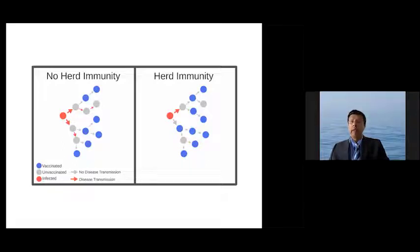So the red arrow goes to blue, the disease can't go to blue, and then it stops there. So this is what is meant by herd immunity. We do not have to have the whole population immune for the disease transmission to be stopped.